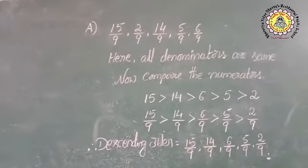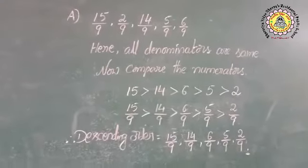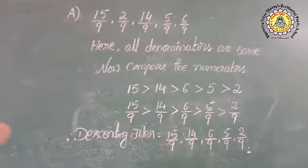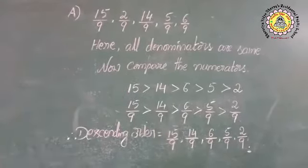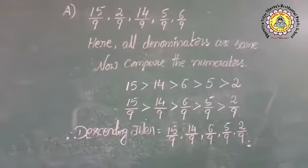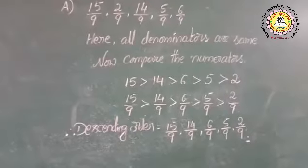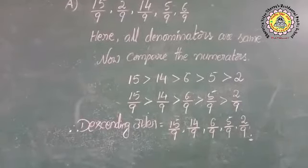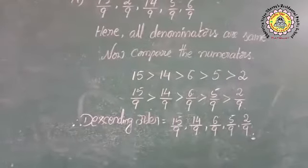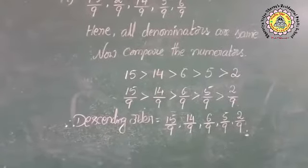The fractions are the same. The procedure is a little bit different. Here, all the denominators are same. Now compare the numerators. We are writing descending order, so we have to start from the biggest number to the smallest number. That is why we compare from bigger to smaller: 15 is greater than 14 is greater than 6 is greater than 5 is greater than 2. If 15 is greater than 14, then 15 by 9 is also greater than 14 by 9. If 14 is greater than 6, then 14 by 9 is also greater than 6 by 9.